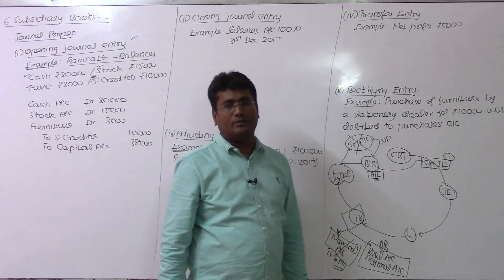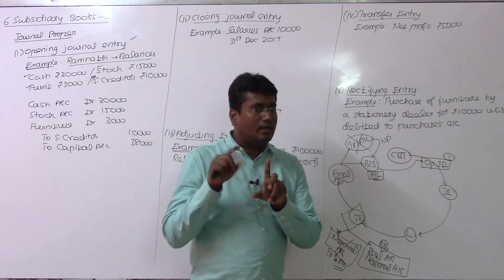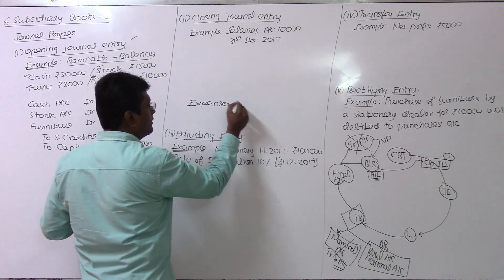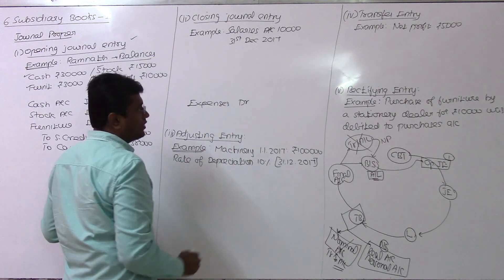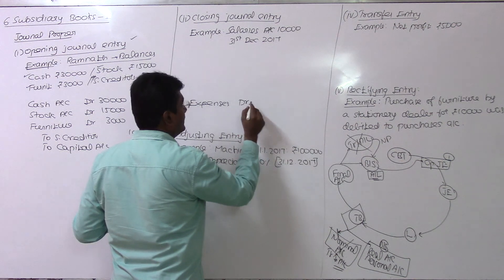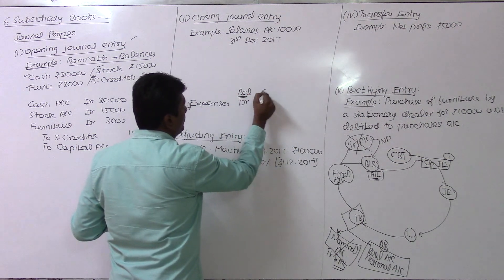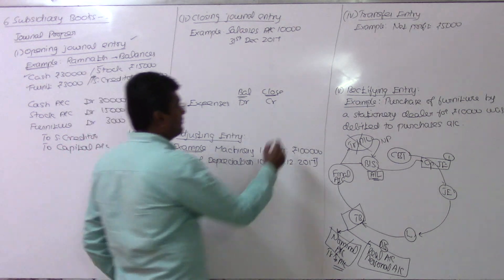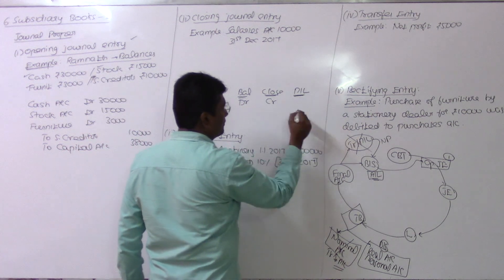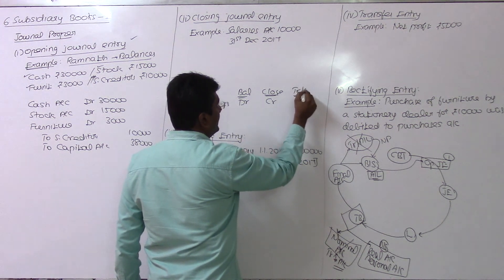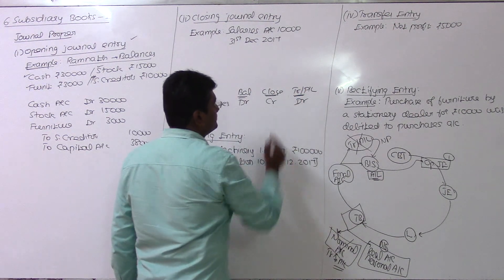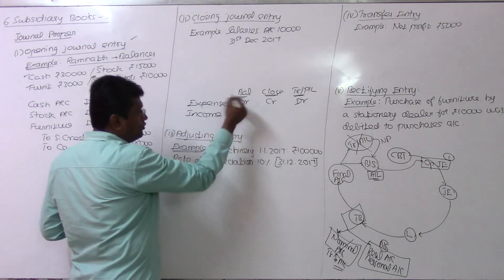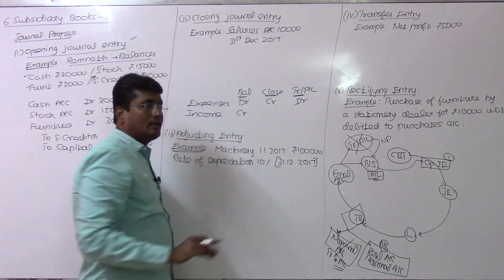In the trading and P&L account, expenses are debited and incomes are credited. Close the nominal accounts — expenses go to the debit side and are closed. The balance goes to the P&L account and trading account. P&L account is a sub-classification of the trading and P&L account. Income and gains, which usually show as credit balances in the trial balance, are credited and closed.